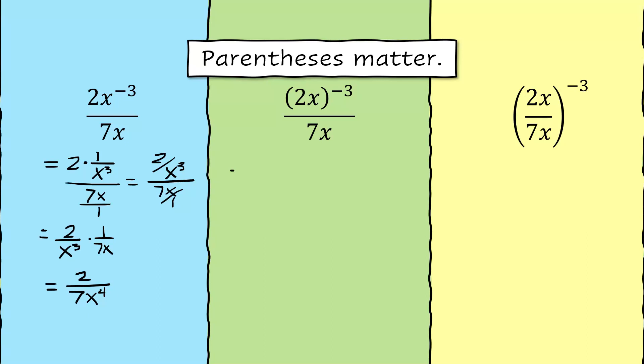In the second case, the entire numerator is being raised to the negative 3rd power, which means that includes the 2 now. So it's 2 to the negative 3rd times x to the negative 3rd. Down below, the denominator of 7x is totally left alone. We end up with 1 over 2 cubed times 1 over x cubed divided by 7x.